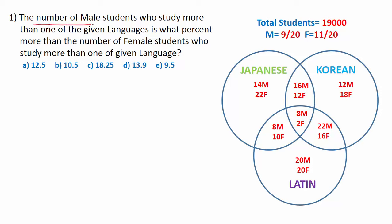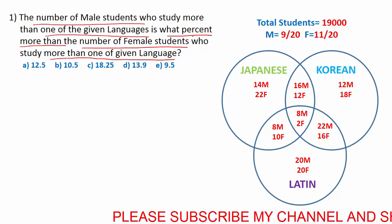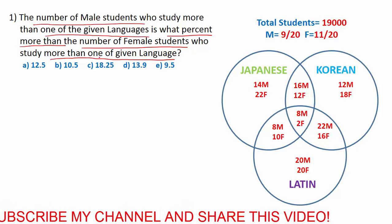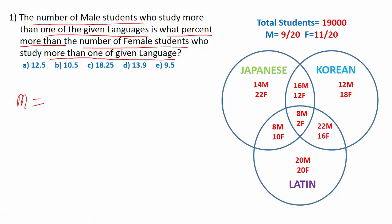First question: the number of male students who study more than one of the given languages is what percent more than the number of female students who study more than one of the given languages? To solve this, first we find male students studying more than one language: 16+8=24, 24+8=32, 32+22=54. Into total male students (9/20).